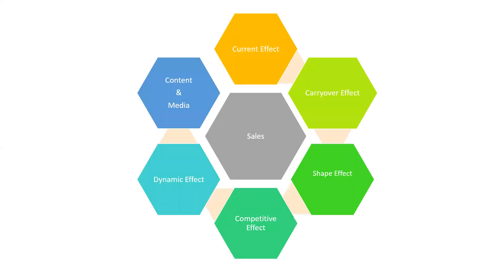As a data scientist building a marketing mix model, we are interested in tracking seven different effects. These are: current effect, carryover effect, shape effect, competitive effect, dynamic effect, content effect, and media effect.